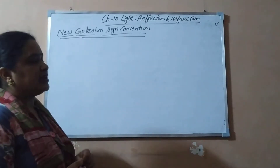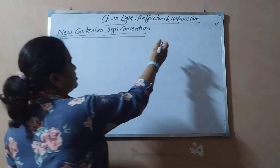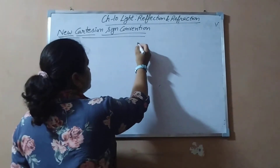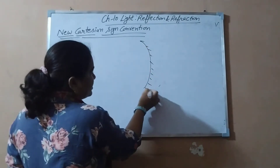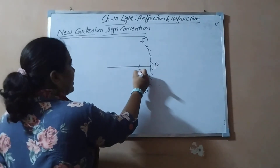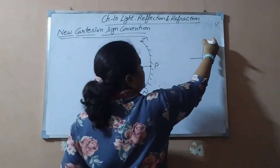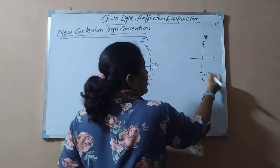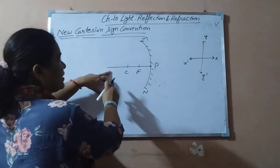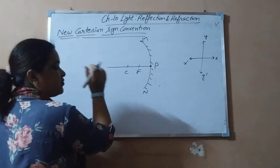According to these rules, the first is that the principal axis is always considered as the x-axis of a coordinate system. The mirror is there, MN is the aperture, and P is the pole. Just like in maths you have done the coordinate system with x-axis and y-axis, similarly this principal axis is considered as the x-axis and the pole is considered as the origin.